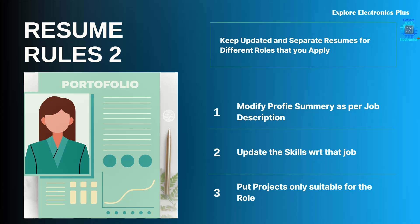For example, in a VLSI job role, you may be applying for a design role, verification role, or physical design role. If you are a fresher or less experienced and applying for different roles at the same time, keep separate resumes for each. Modify the profile summary as per the job description and put the relevant keywords. If they are asking for a functional verification engineer, mention it in your profile summary; if they want design verification, use that keyword instead.